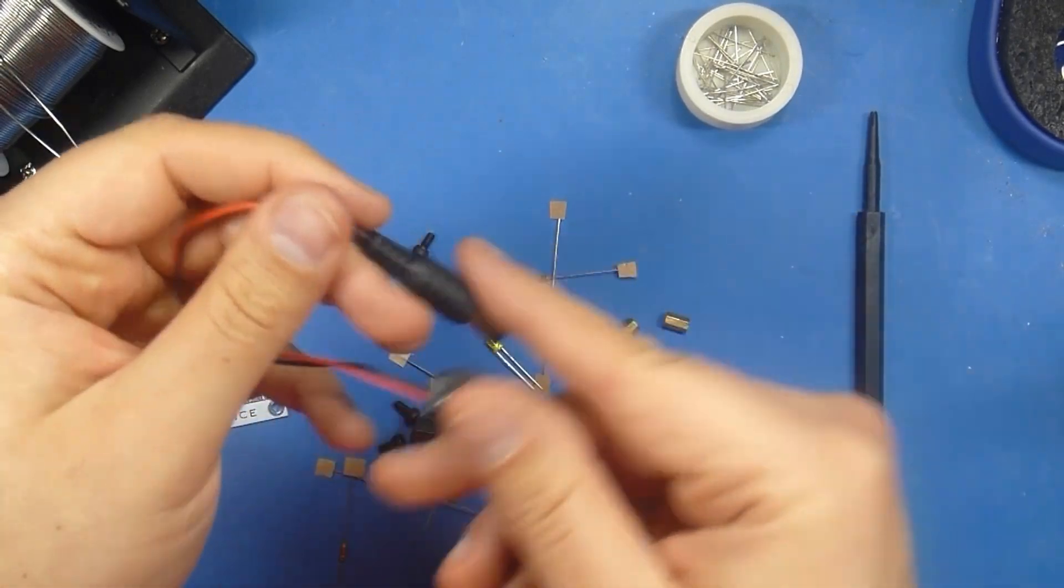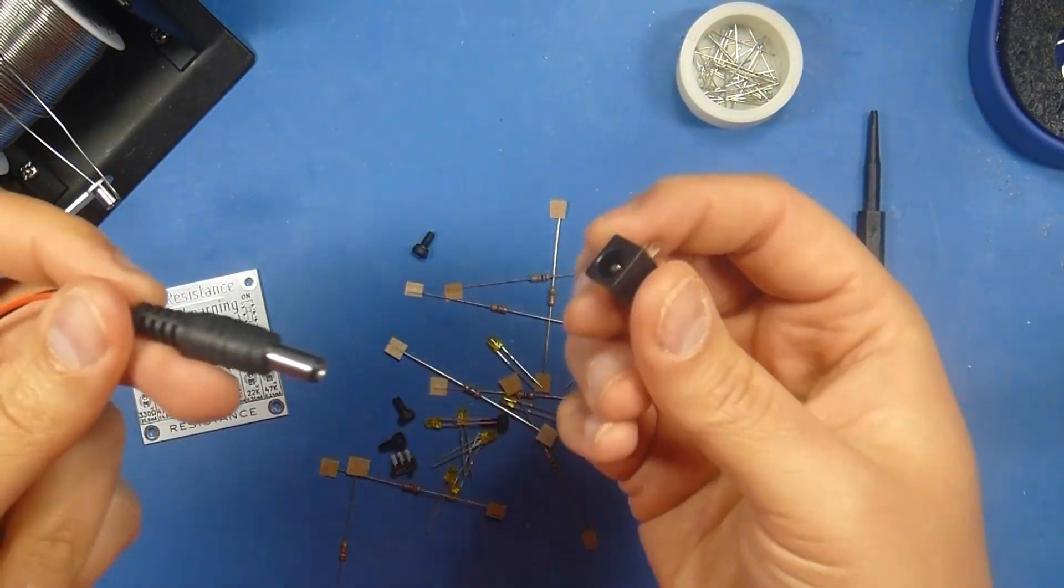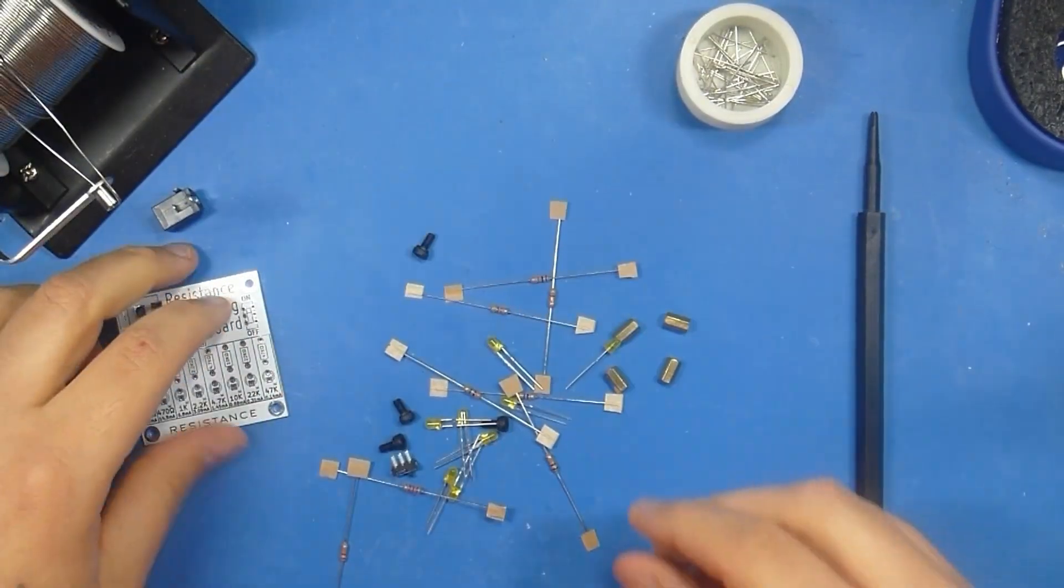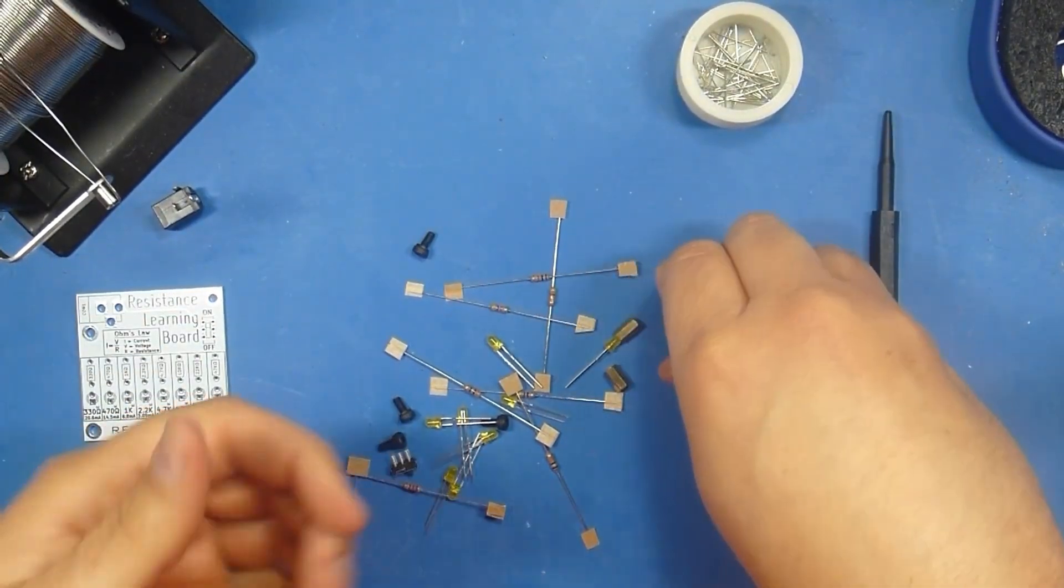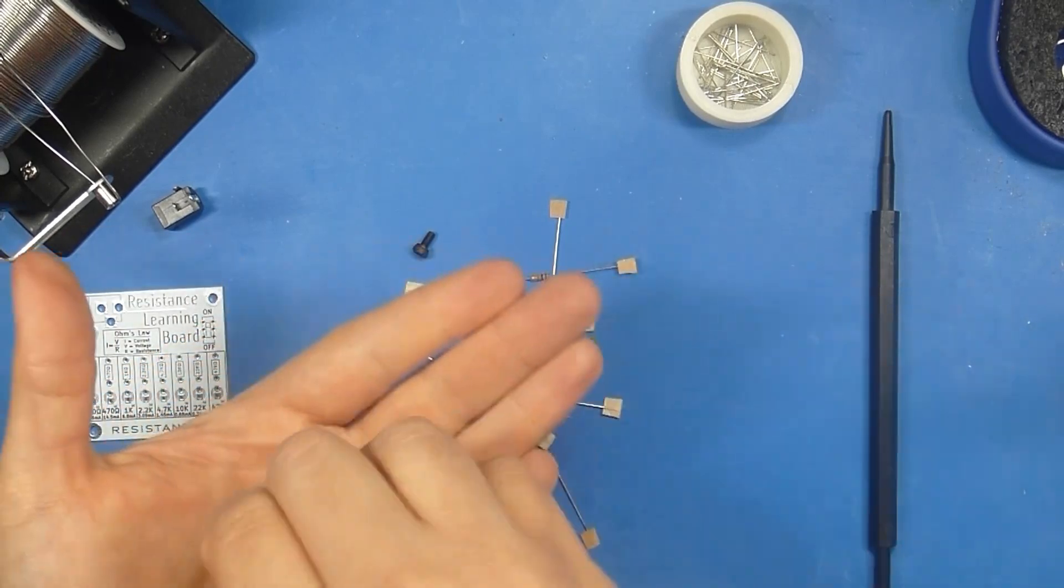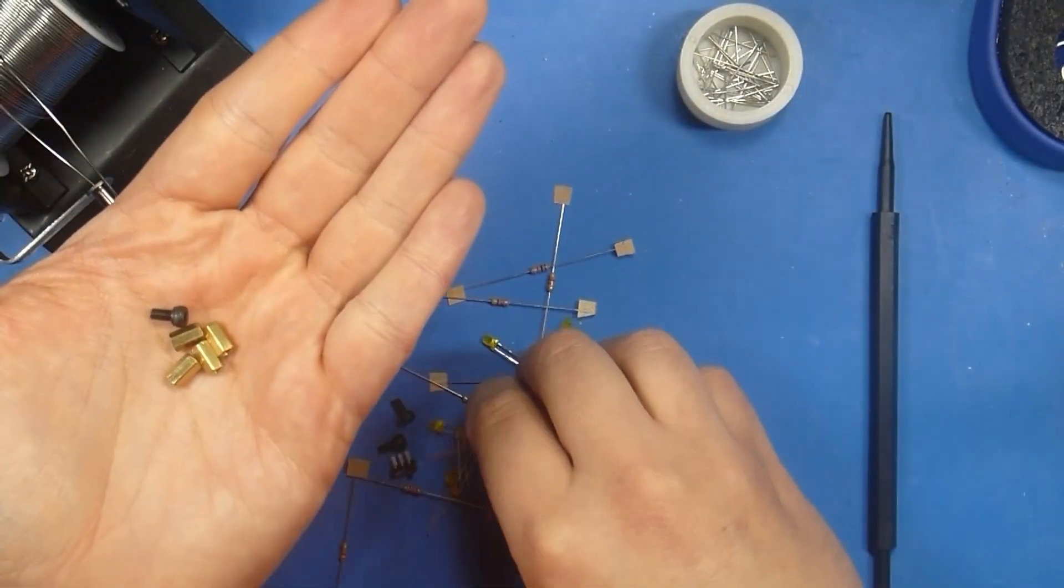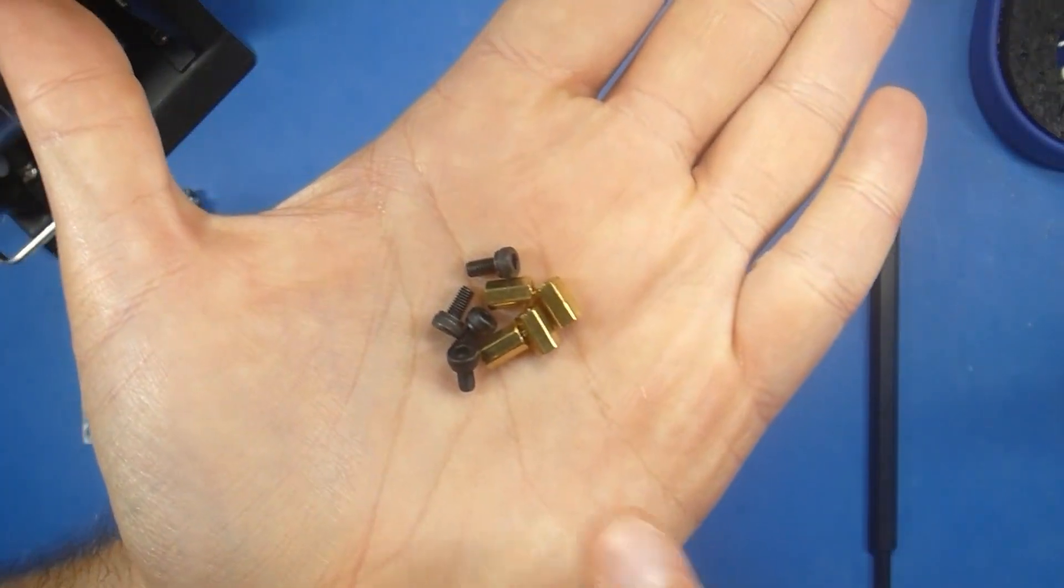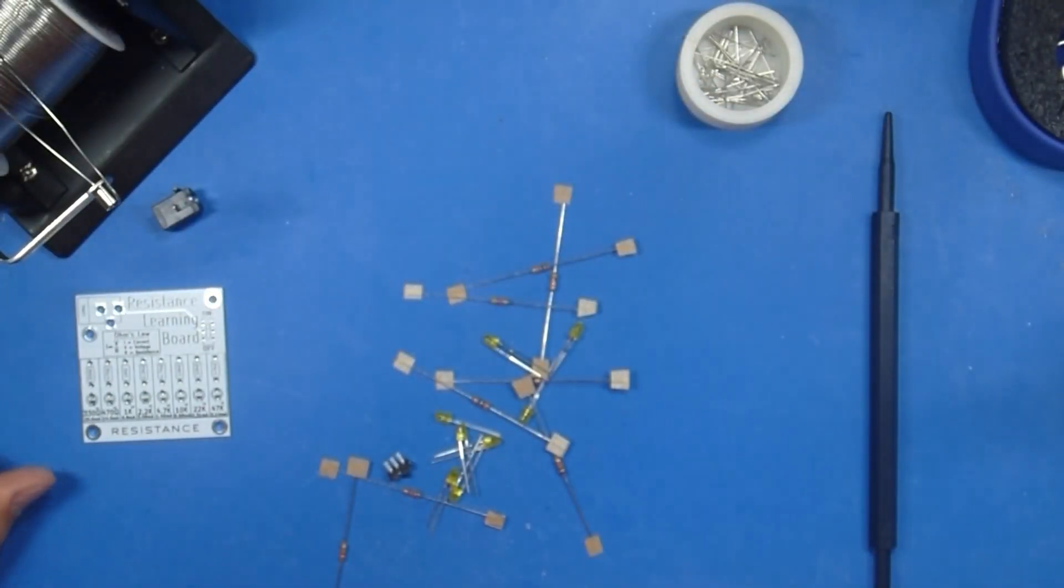We have a 9-volt to barrel jack connector. We have the barrel jack, which actually connects to it. That's what we'll solder to the board. Then we have these 4 hex standoffs, along with 4 M3 screws. Now we're not going to need those until the very end, so we can set those aside.